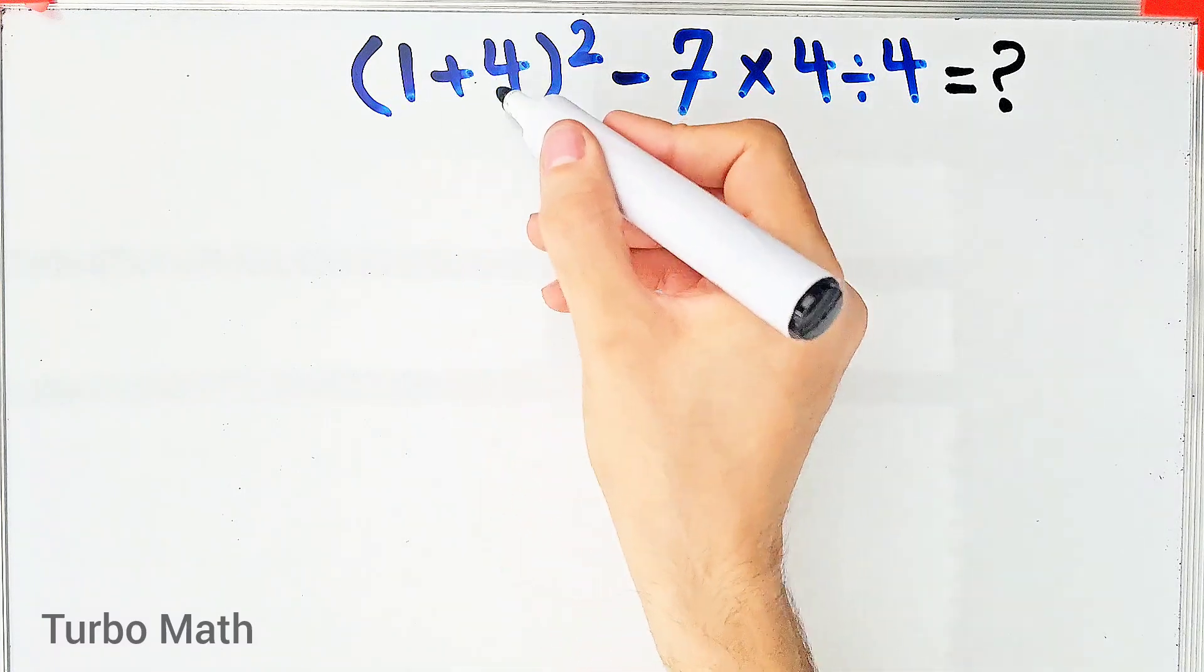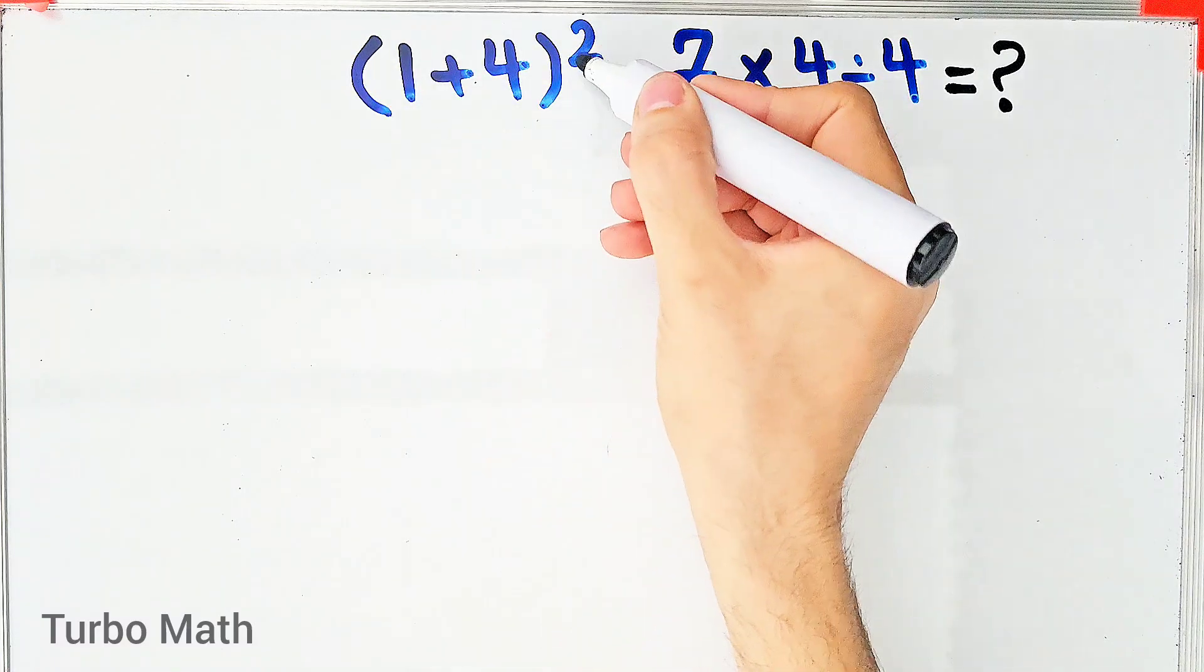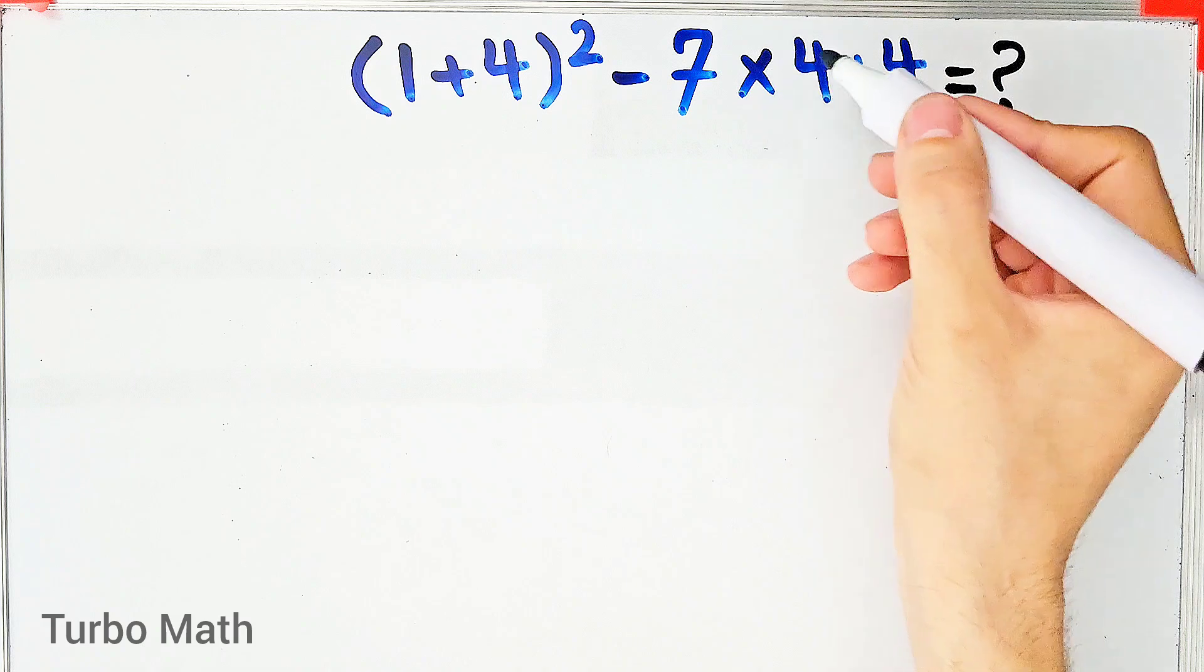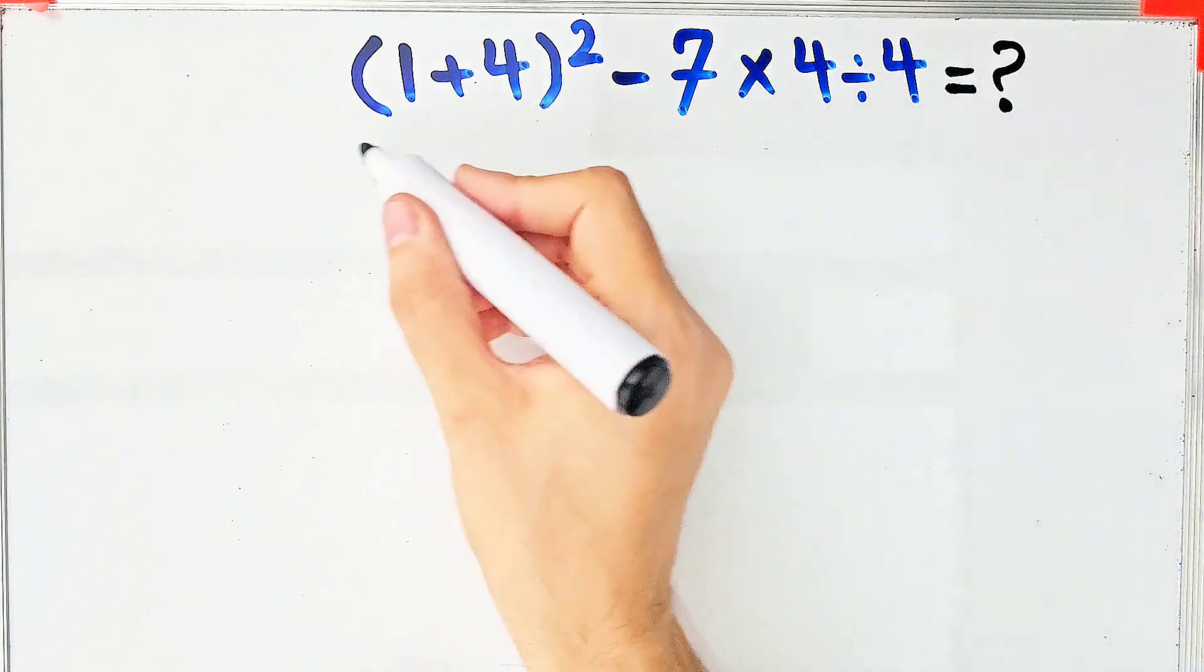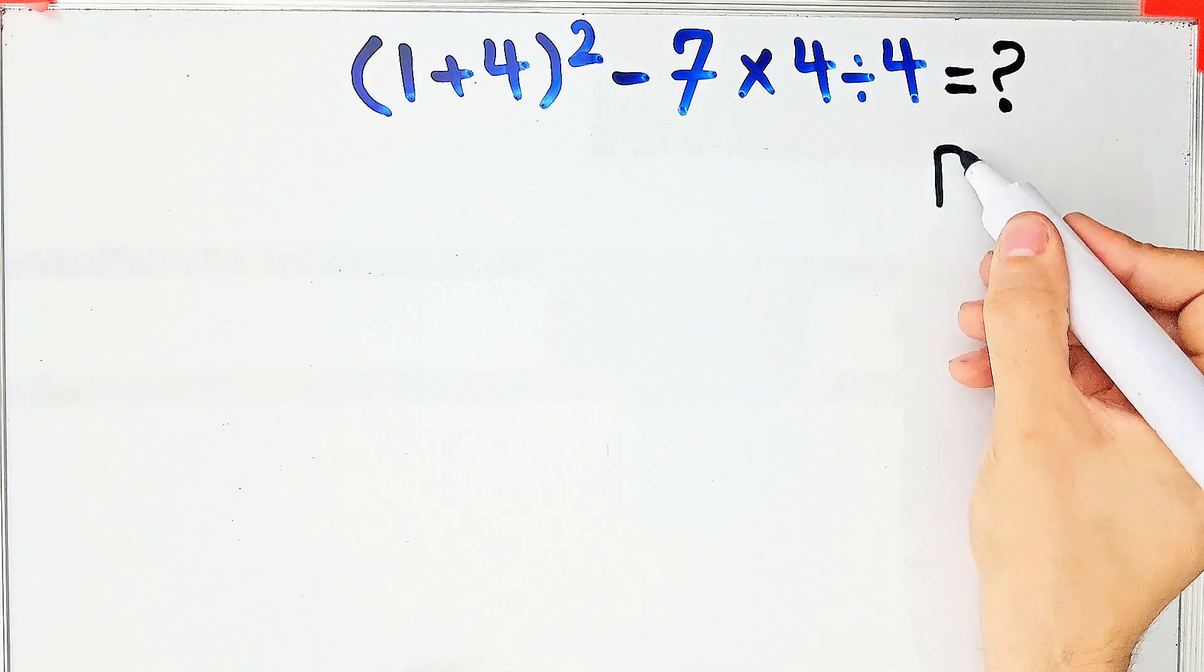Open parenthesis one plus four closed parenthesis to the power of two minus seven times four then divided by four. What is the answer to this question? Can you solve it? Hi friends and welcome to Turbo Math Channel.